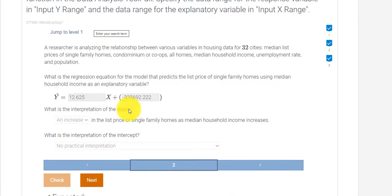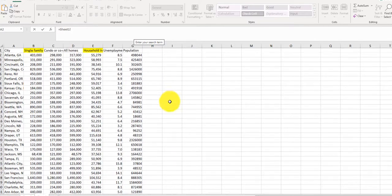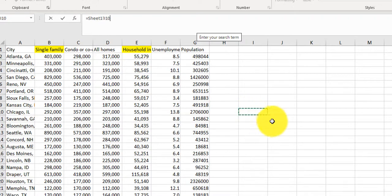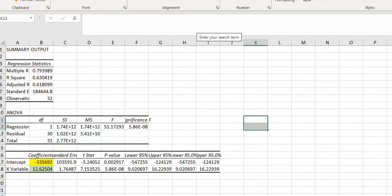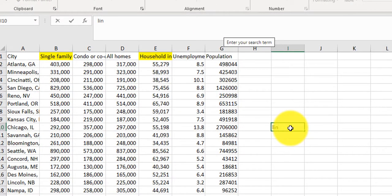But before I go, I do want to show you how to get this linear regression equation without using the data analysis tool pack. So if you have a Mac and you can't load that data pack, there is another way to get this answer. So I go back to my spreadsheet. And remember, we're looking at single family homes and household income. So if I type in the word equals L-I-N-E-S-T.